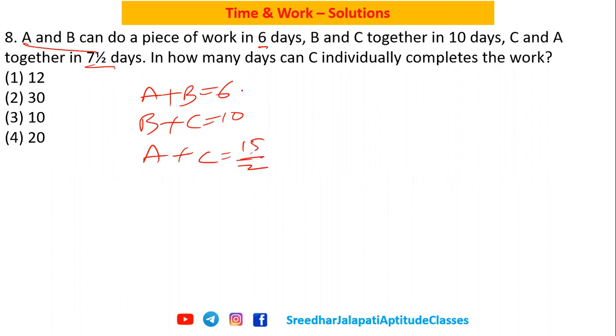So if A and B together work, they finish in six days, then their one day work is 1/6. B and C together one day work is 1/10. A and C together one day work is 2/15.